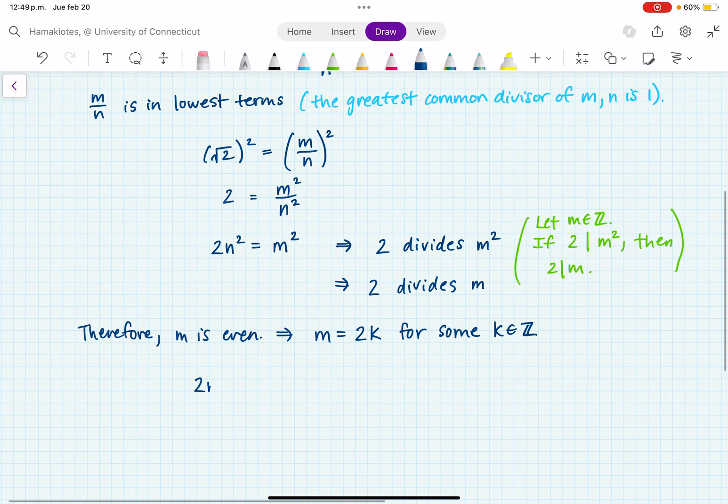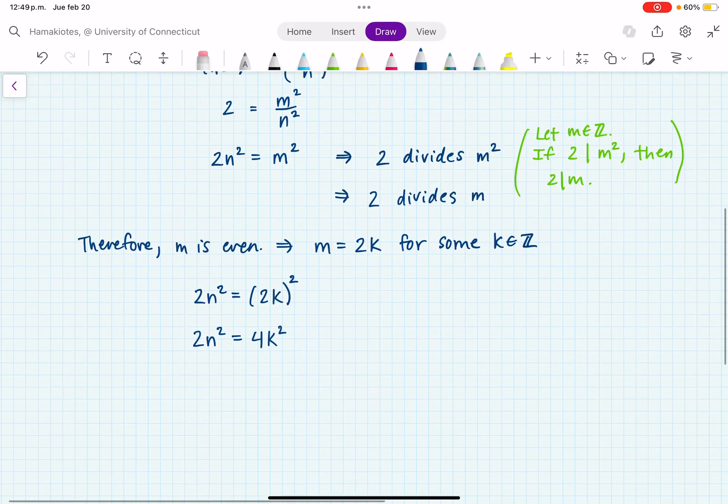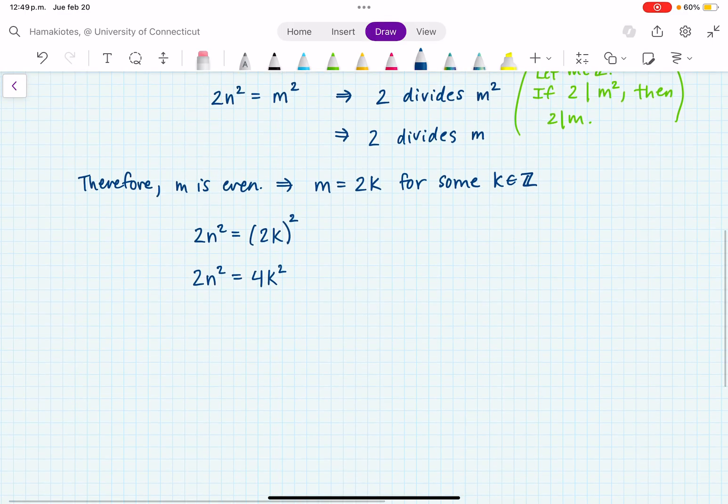So we have 2n squared equals m squared, but m is 2k because it's an even number, and this is m squared. So now if we factor this out, we have 2n squared equals 4k squared. So we can divide both sides by 2 and get n squared equals 2k squared.